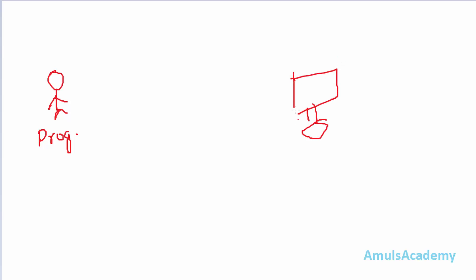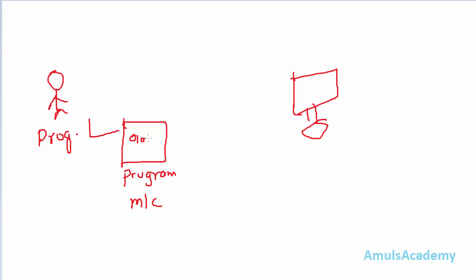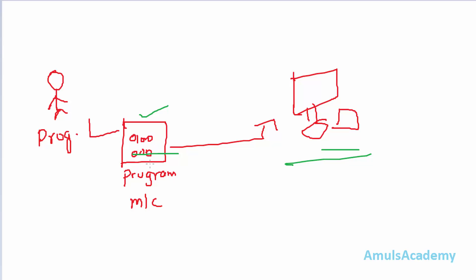We can show this in a picture. Here is a programmer and here is a system. The programmer writes a program in machine language — it contains zeros and ones — and this is given to the computer. Inside the computer there is a processor that executes the instruction. This code is different for different processors, so this is called a machine dependent language.